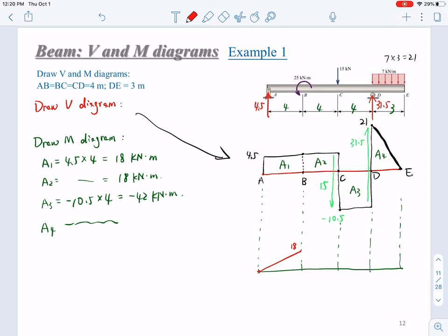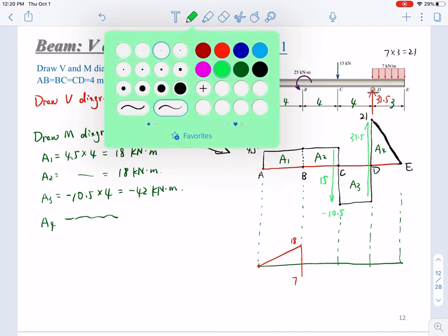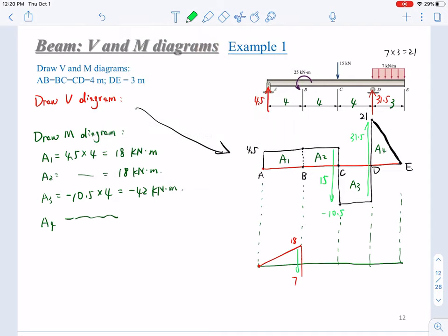Then from point B, at point B, you have an external bending moment, 25. This is counterclockwise. So it will jump down to 7. This is down by 25. Then here at point B, you get a 7.